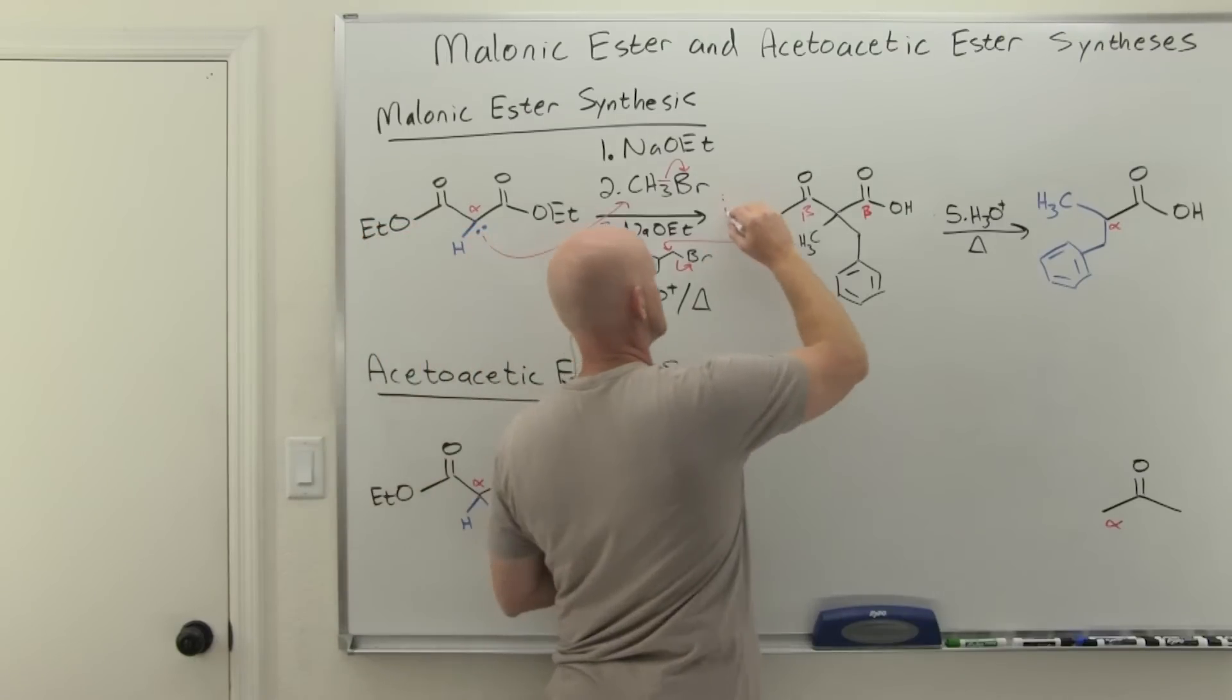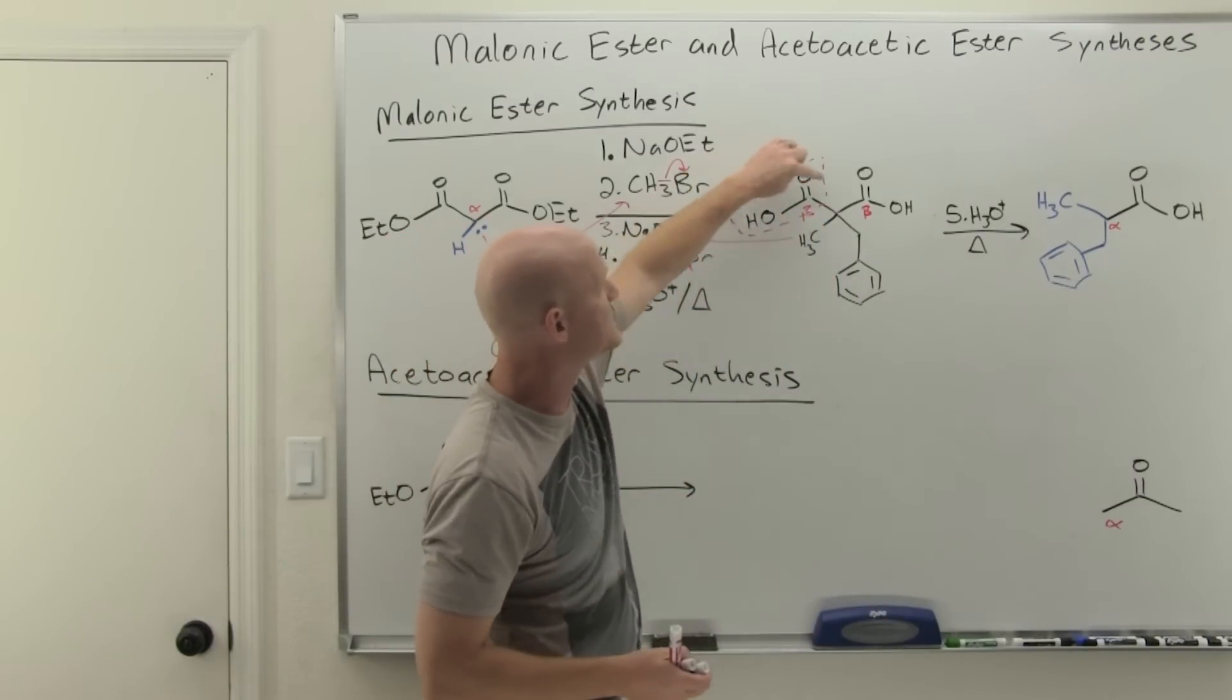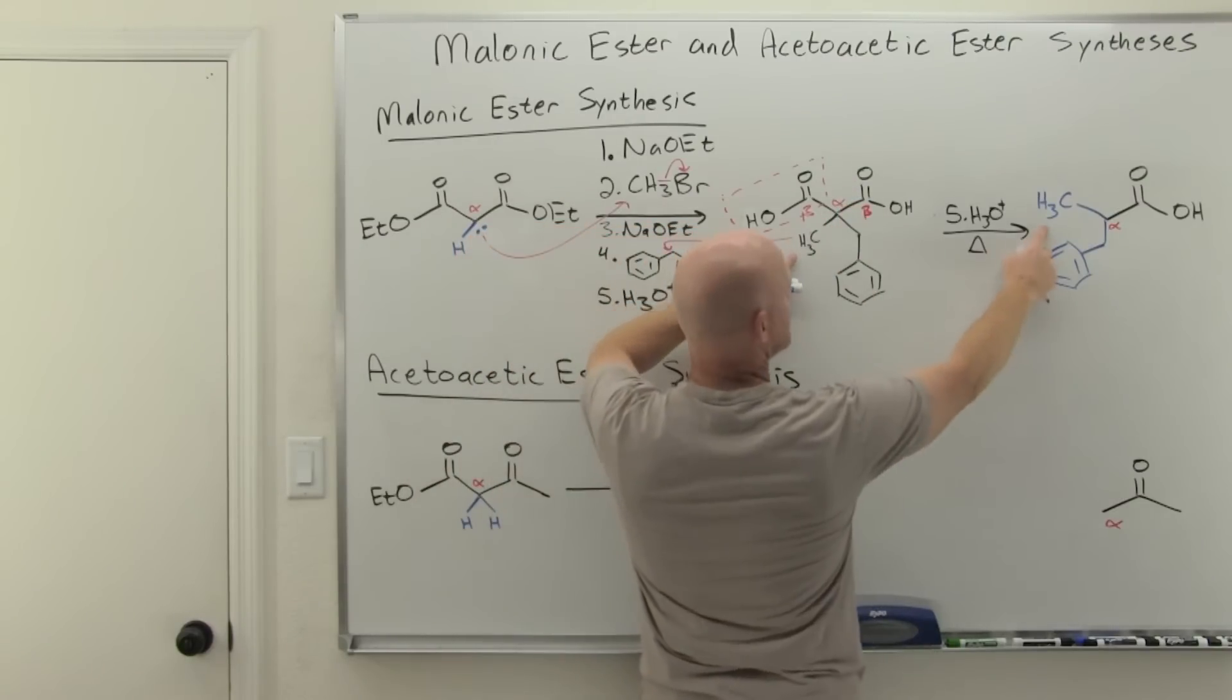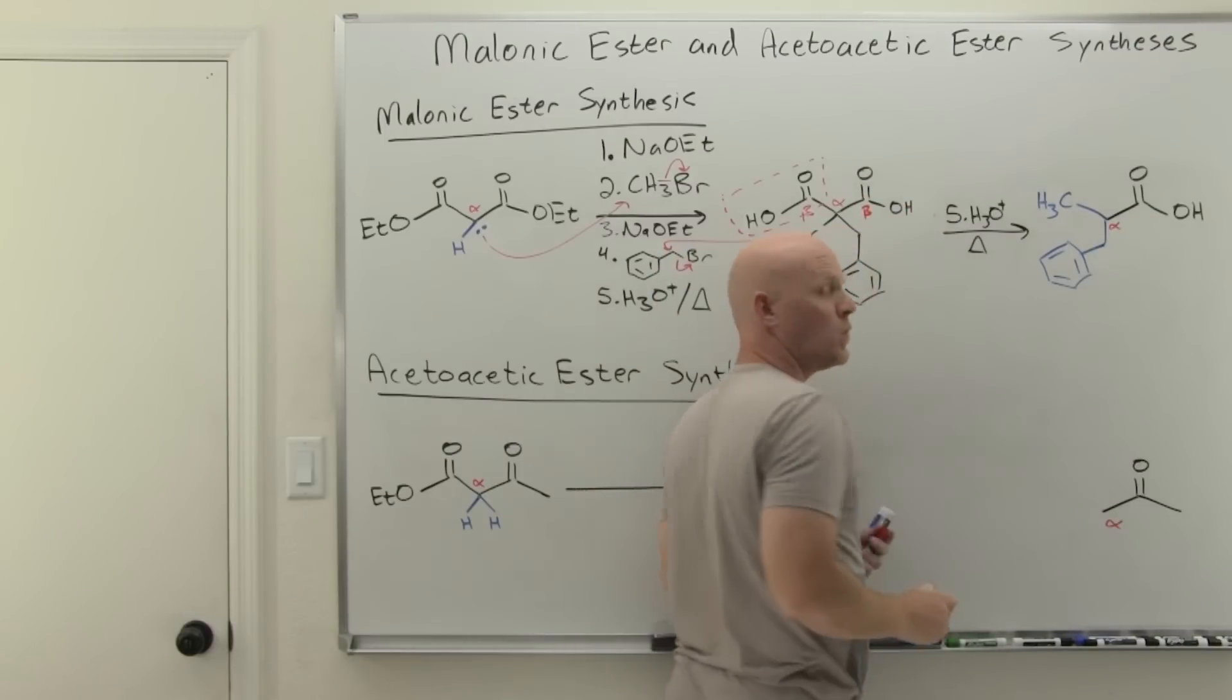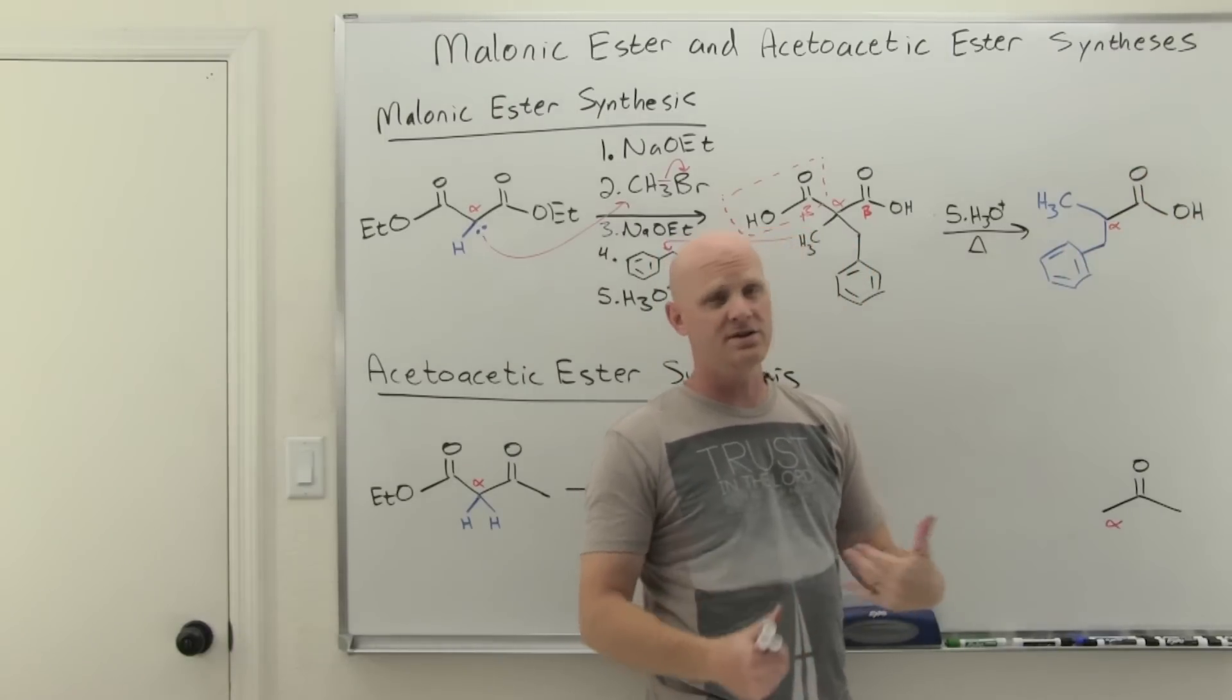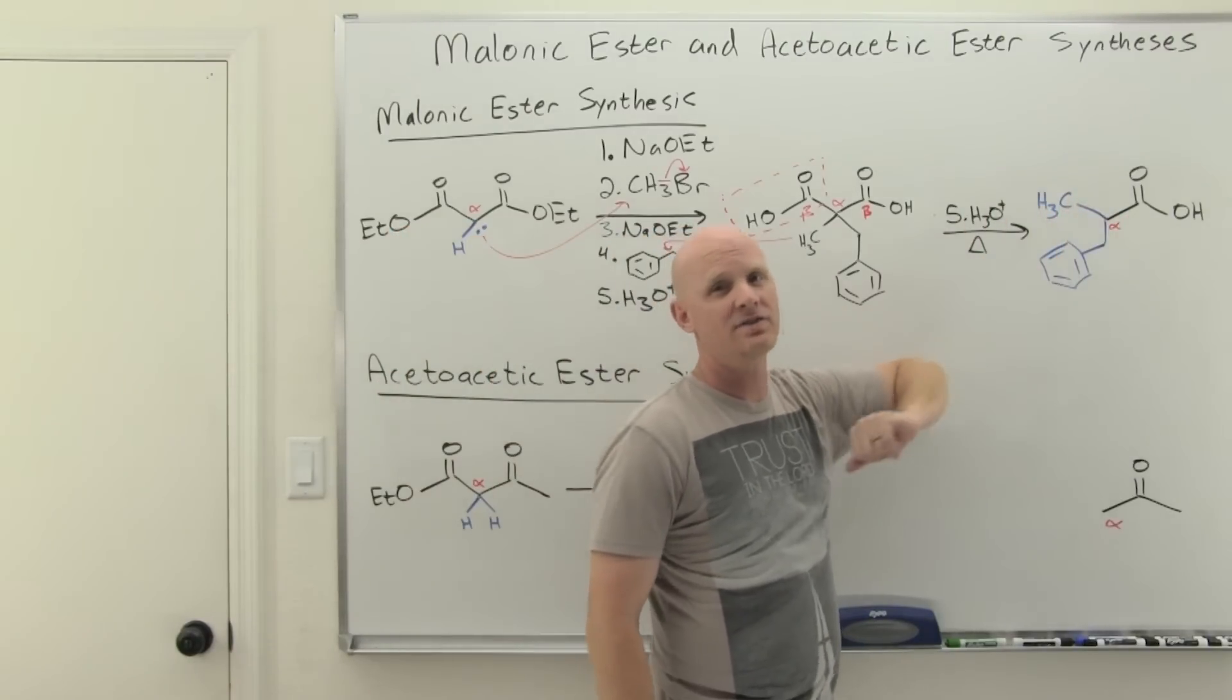I'm just going to choose the one on the left so we can line it up with our product here, but it doesn't really matter. But we're going to lose this guy here as carbon dioxide and our alpha carbon right there is still going to be bonded to a methyl group and a benzyl group and still have a carboxylic acid on the other side. Once we've lost the one carboxyl group, the second carboxyl group is not going to be lost. He's not beta to any other carbonyls at this point. So perfectly stable.